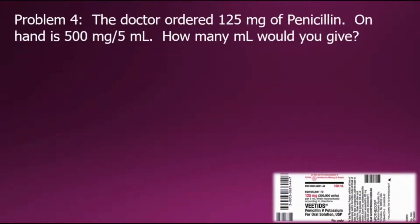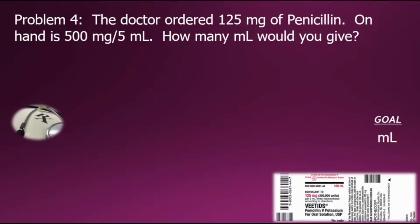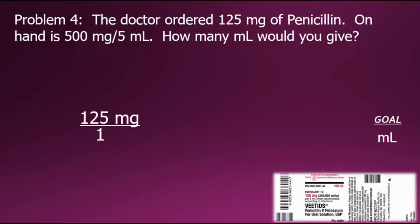Problem four states the doctor ordered 125 milligrams of penicillin. On hand is 500 milligrams per 5 milliliters. How many milliliters would you give? To answer the question, we need our solution in milliliters, so we'll set milliliters as the goal. We begin with the doctor's order and express it as a fraction — 125 milligrams over 1 — following the procedure from the previous problem.